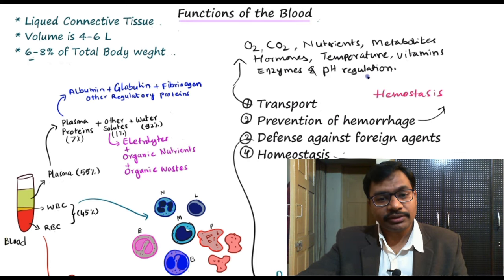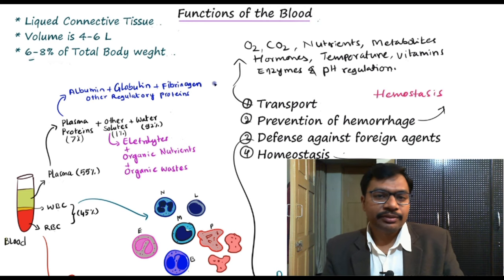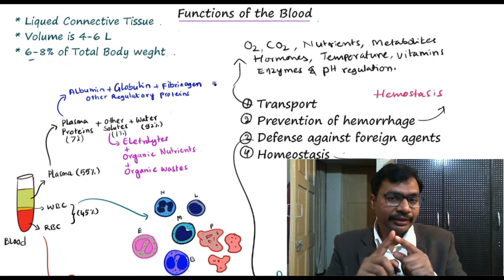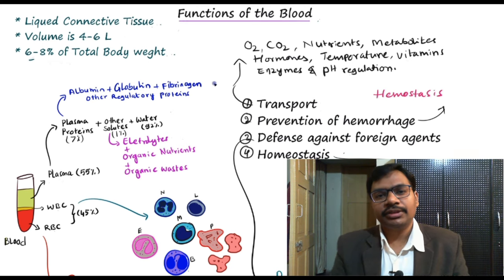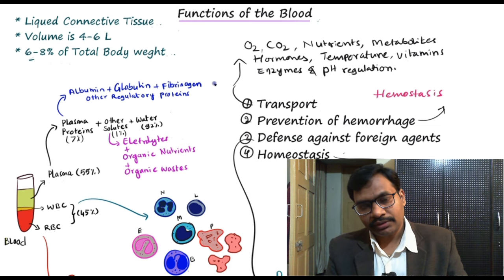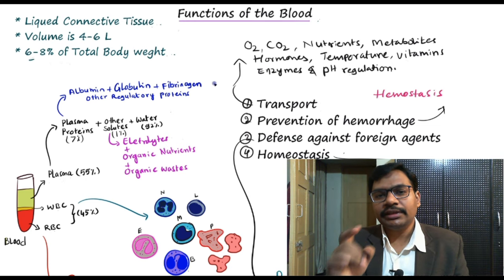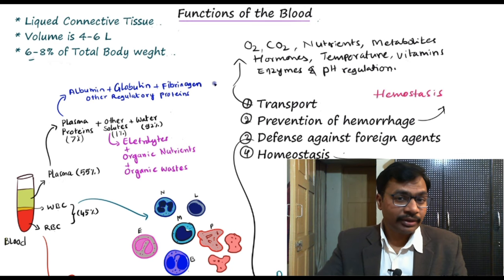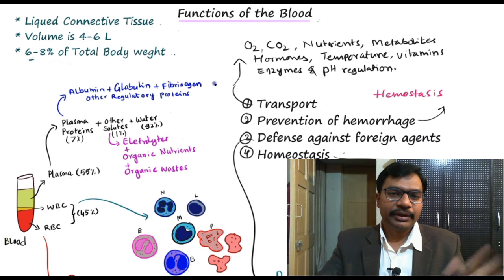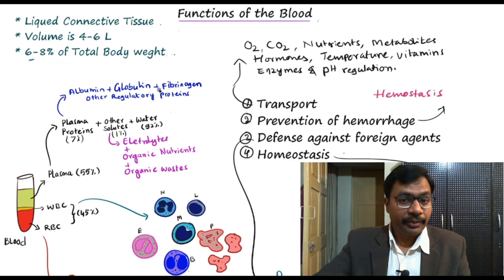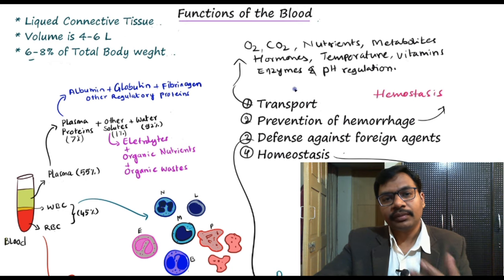Blood also maintains pH regulation. The physiological pH range of blood is 7.3 to 7.4, which is very important to keep all cells in functional status. Any deviation from this pH range leads to abrupt changes or shutdown of cellular metabolic processes.